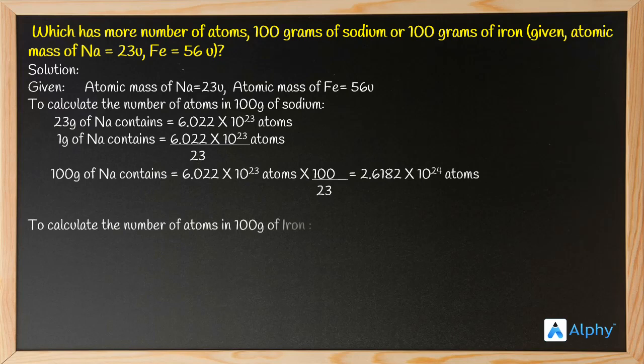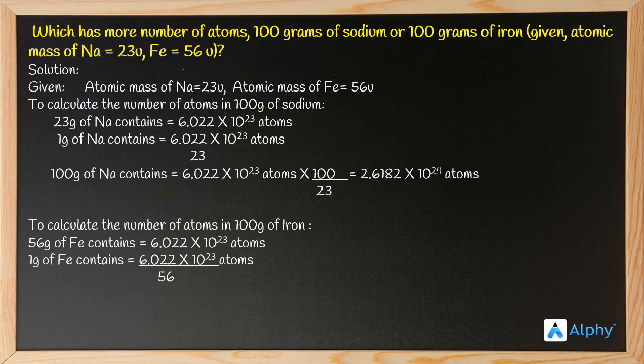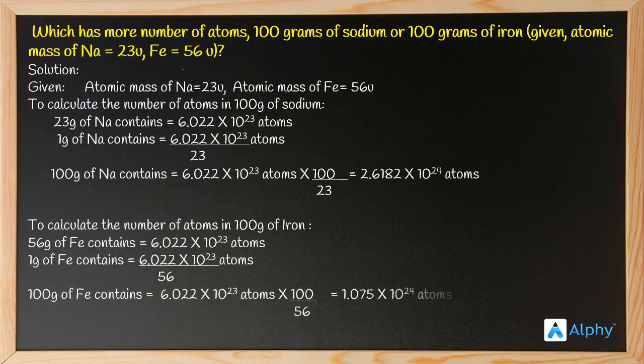To calculate the number of atoms in 100 grams of iron: 56 grams of iron contains 6.022 × 10²³ atoms — that is Avogadro's number, our constant. So 1 gram of iron contains 6.022 × 10²³ divided by 56 atoms. For 100 grams: 6.022 × 10²³ × 100 divided by 56, giving an answer of 1.075 × 10²⁴ atoms.